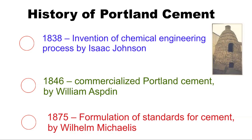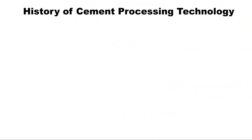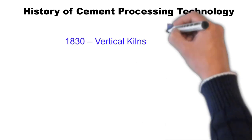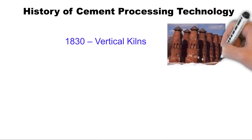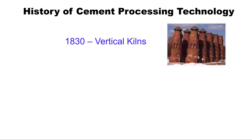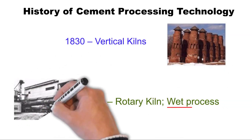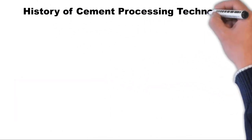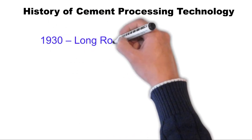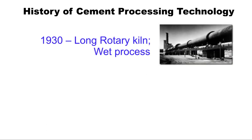Next, let's look at the process technology used in development of cement. Literature says that in the 1830s most researchers used vertical brick kilns for development of cement. The first rotary kilns with wet process technology were used in 1885. In the 1930s, the first long rotary kilns using wet process technology were used to produce large quantities of cement.